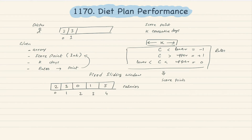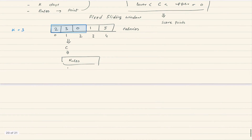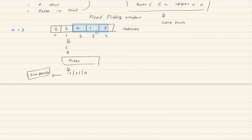Let's take an example. Suppose we have some calories array and the k size is equal to three — a window of size three. Once we have that window, we calculate the total consumed calories in those days, apply the rules, and give him either minus one, plus one, or zero. Each time the window moves, we get three new days as a candidate, apply the rule, and slide the window further on those three consecutive days.